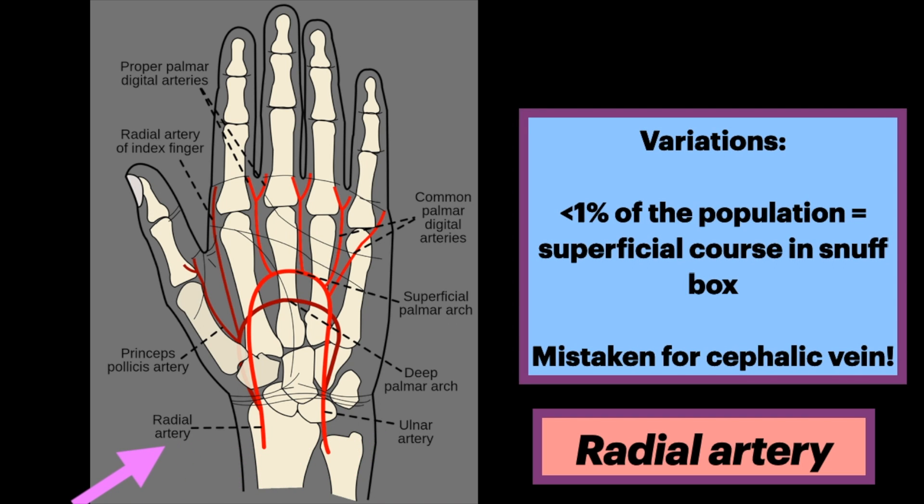Variations in less than 1% of the population include a superficial course in the anatomical snuffbox. This can be mistaken for the cephalic vein, as accidental injection of this variant radial artery has been reported.